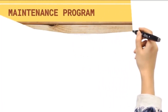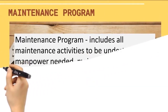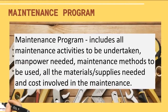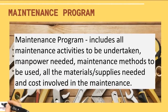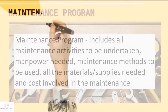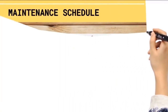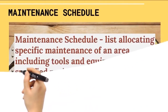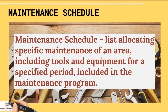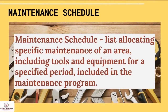Maintenance program. A maintenance program includes all maintenance activities to be undertaken, manpower needed, maintenance methods to be used, all materials and supplies needed, and the cost involved. Maintenance schedule — a list allocating specific maintenance of an area including tools and equipment for a specified period, included in the maintenance program.